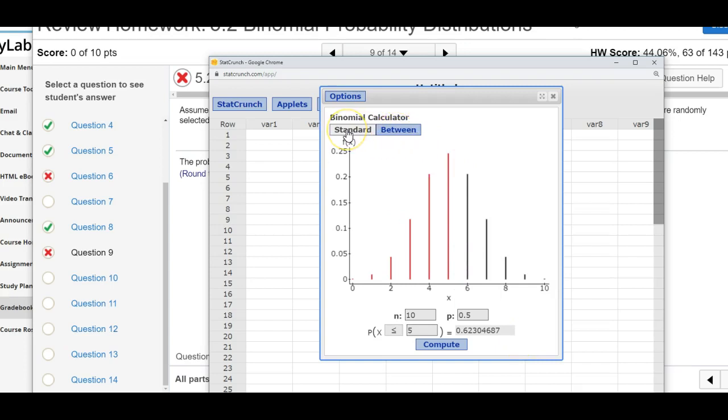You can do standard or in between. So this said at least six, so what's the probability that it's going to be greater than or equal to six? So you're going to have a drop down here. X is six here.